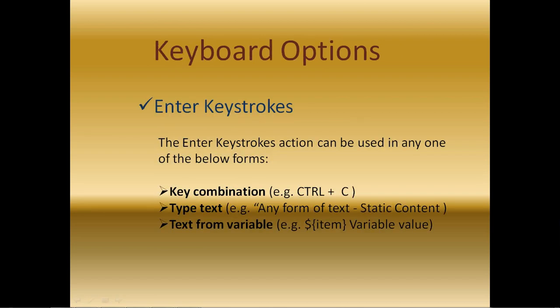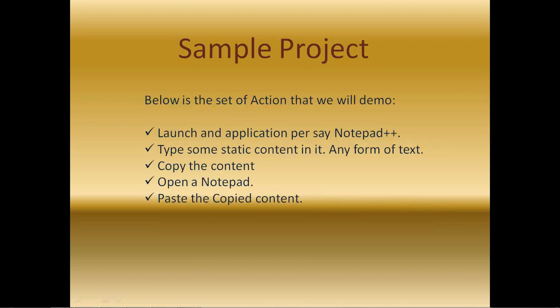The keyboard options we have are the enter keystrokes. The enter keystrokes action can be used in any one of the following forms: one is the key combination, such as Ctrl+C, Ctrl+S, Windows+R, and so on. Another is type text, where we can type static content. The third option is text from variable, where we store a value dynamically in a variable and then retrieve it.